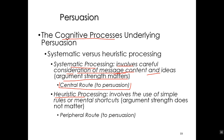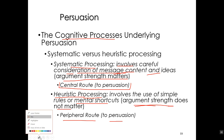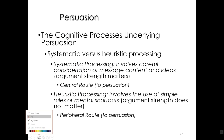The other route is the heuristic route — the same heuristics from cognition. This involves the use of simple rules or mental shortcuts, where argument strength doesn't matter. We call this the peripheral route or heuristic processing. We're either processing information systematically along the central route, or heuristically along the peripheral route.